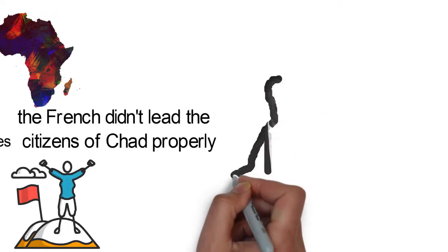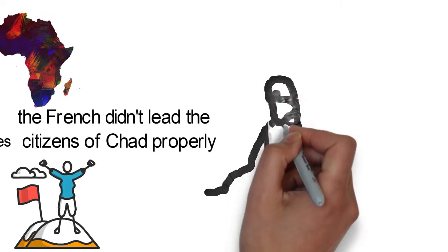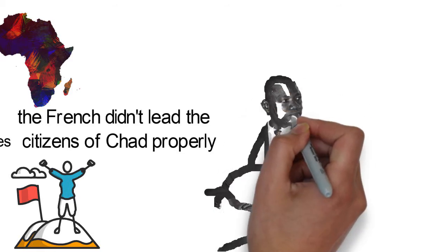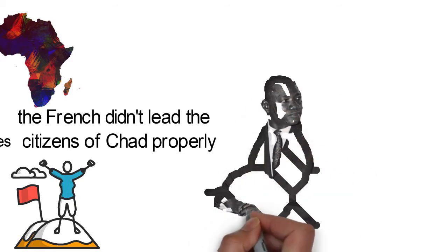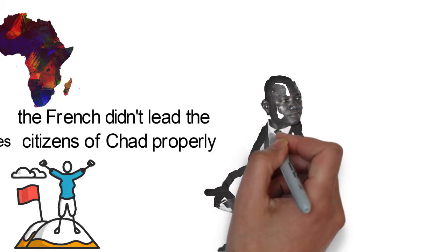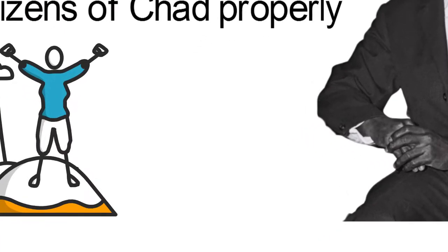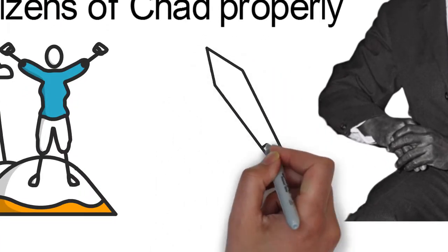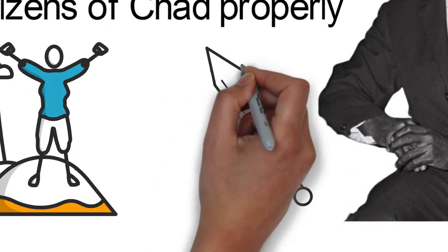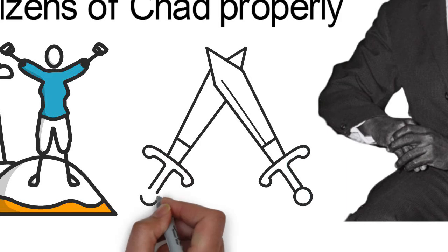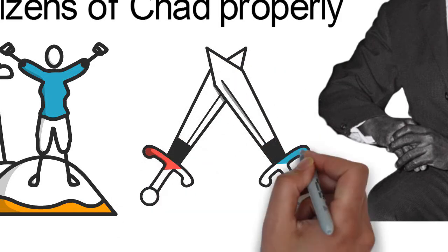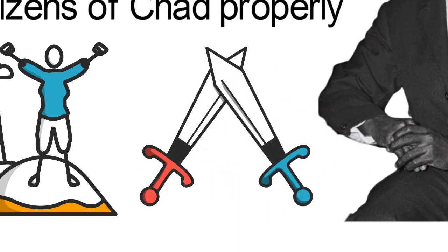In 1960, Chad obtained independence under the leadership of François Tombolbaie after a long walk to freedom. Resentment towards Tombolbaie's policies in the Muslim North led to a long-lasting civil war in 1965.